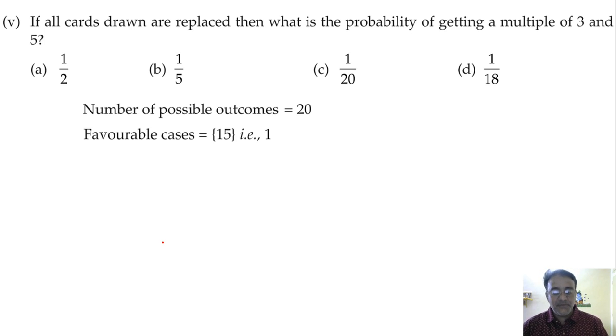Only one card, that is 15. So what is the probability? 1 by 20, right. 1 by 20. So correct option is C.